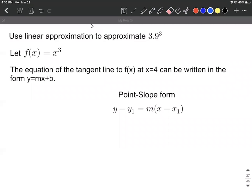On this example we're going to use linear approximation or sometimes referred to as tangent line approximation to approximate 3.9 raised to the third power. Because this is raised to the third power we're going to use the function f of x equals x cubed.